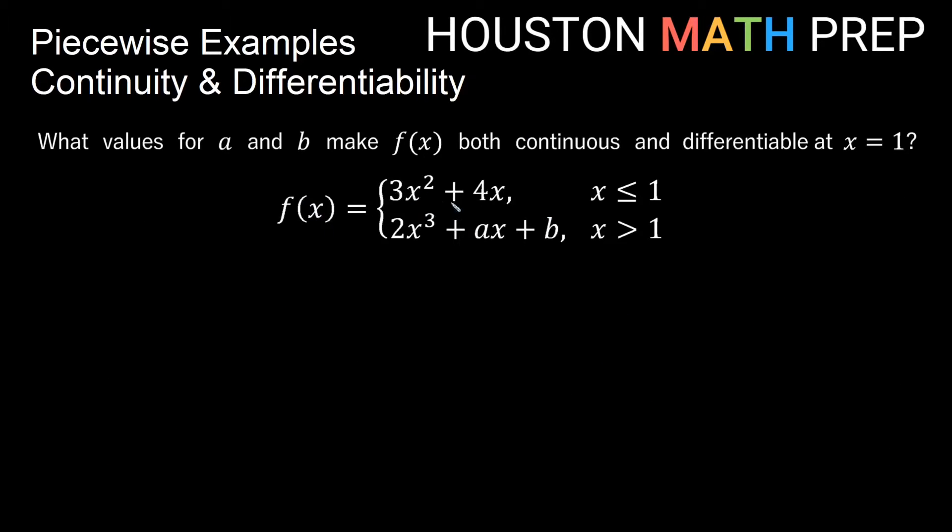Let's look at an example of that. So we have 3x squared plus 4x is a piece. That is when x is less than or equal to 1, and we have 2x cubed plus ax plus b, so we have two constants in here now, and that's when x is on the other side of 1, when x is greater than 1. We want to find the values for a and for b that make this both continuous and differentiable at x equals 1.